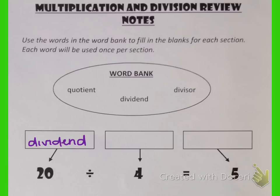4 is the number that 20 is being divided by, so that means it is our divisor. And then 5 is the answer, which we also call the quotient.